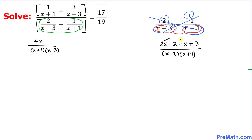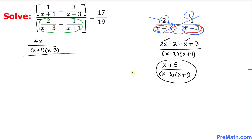On the top, 2x minus x is going to give us x and 2 plus 3 is going to be 5, divided by x minus 3 times x plus 1. So this denominator part could be written as x plus 5 divided by x minus 3 times x plus 1. We are going to replace that one: x plus 5 divided by x minus 3 times x plus 1.